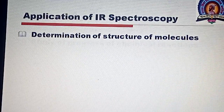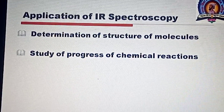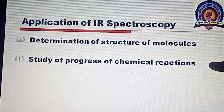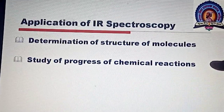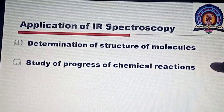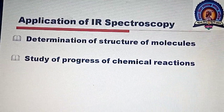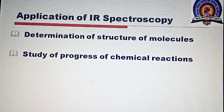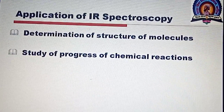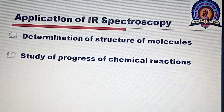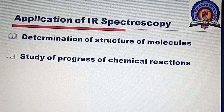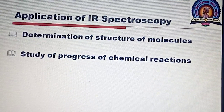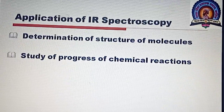The second application of IR spectroscopy is to study the progress of a chemical reaction. IR spectroscopy is useful to study the progress of chemical reactions, to control chemical reactions, and to study the kinetics of various chemical reactions. These applications are based on the fact that most chemical reactions involve a change in functional group.